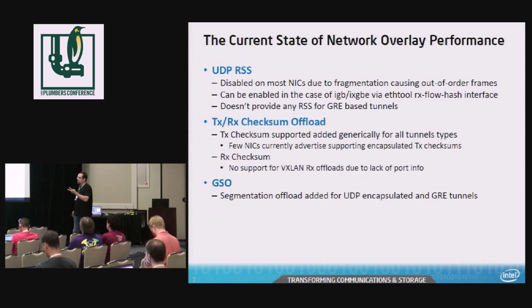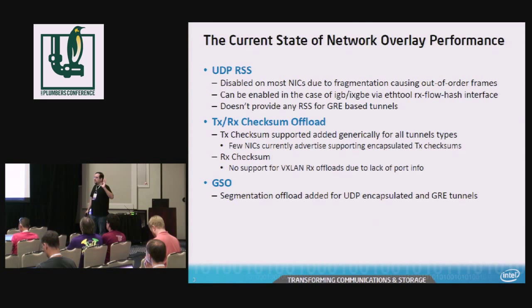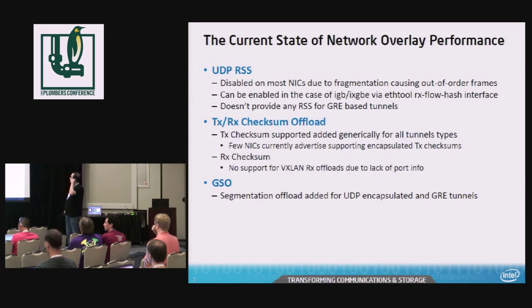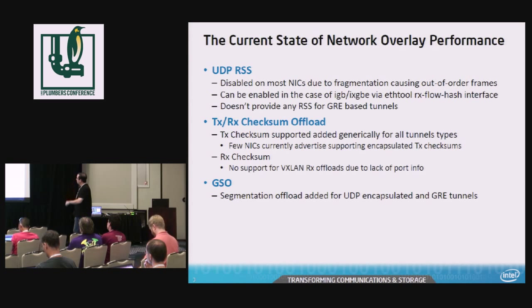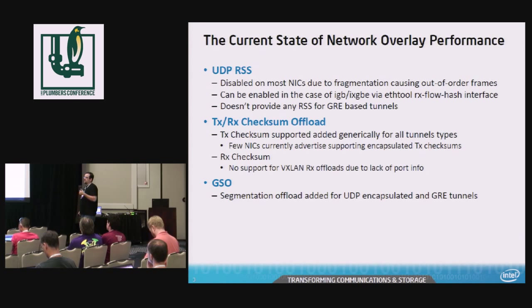Everything shows up as a pair of endpoints. To make matters worse, in the case of VXLAN, since it's encapsulated inside a UDP protocol, we normally ignore UDP because it can be fragmented, which causes out-of-order problems. At least in the case of RNEX, we have a feature for turning on or off the UDP flow via the RX flow hash interface, so you can specify that you want to include the source and destination port numbers — important because the source port in VXLAN actually contains a hash which allows for queue distribution.